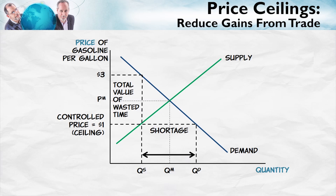Notice that these trades which fail to take place are mutually profitable — the buyers are willing to pay more for these units than the sellers require to sell them. Because of the price control, buyers and sellers are not allowed to come to a mutually profitable deal at a price above $1. The buyers are willing to pay $3 for another gallon of gasoline, and the sellers are willing to sell that gasoline for $1 — so there's a mutually profitable trade worth $2 in mutual profit. They would like to make this deal, but it is illegal to sell at a price above $1.